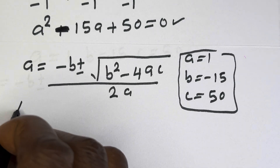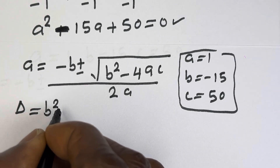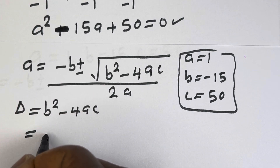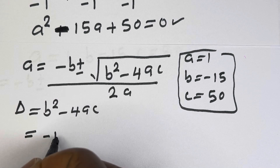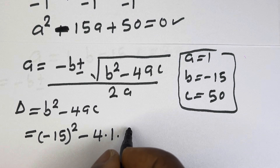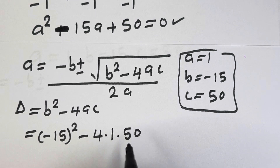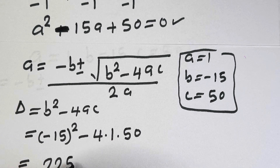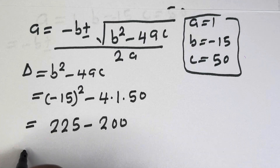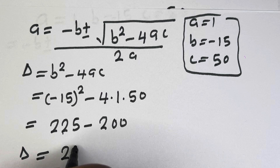We calculate the discriminant D equals B squared minus 4AC. This equals minus 15 squared minus 4 times 1 times 50. That is 225 minus 4 times 1 times 50, which is 200. Then D equals 225 minus 200, which is 25.